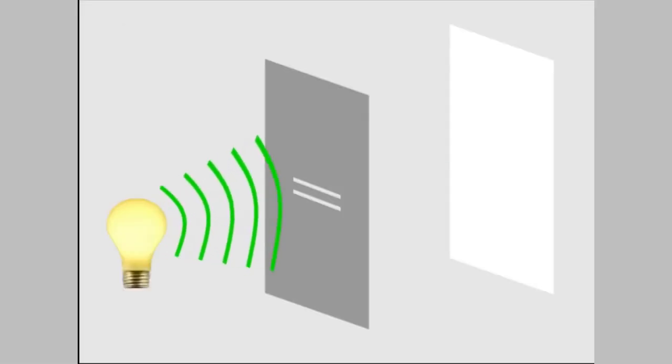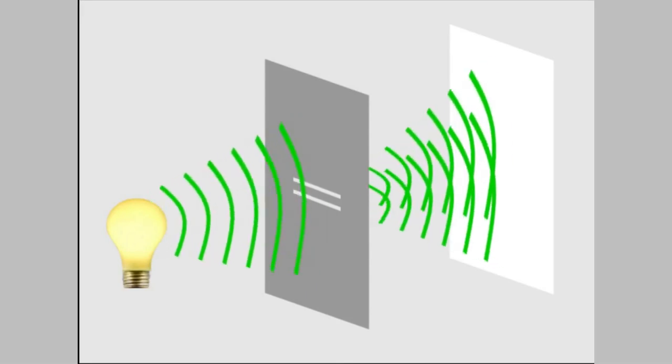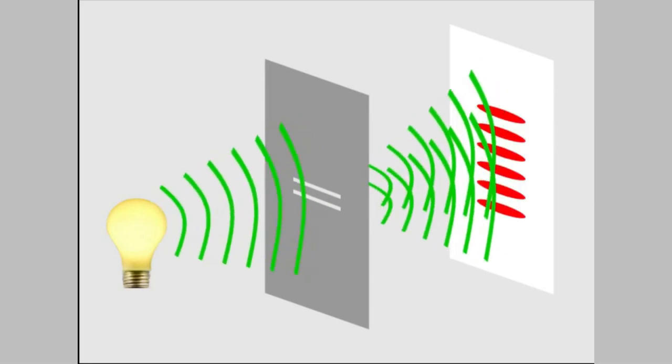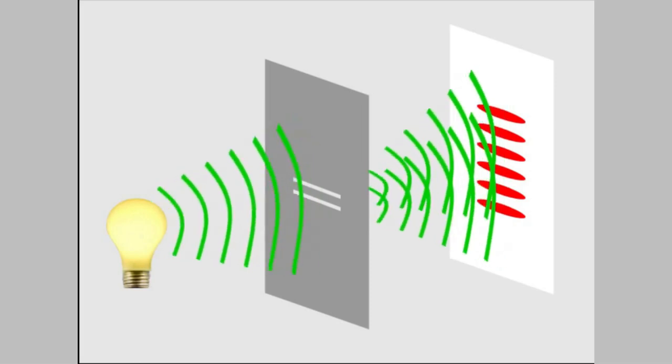The half circles that you see here are the tops of the light waves. Wherever the tops meet, they add together and become higher. For a light wave, a higher wave means brighter light. So if we put a card down here, what we'd see is bright spots where the tops of the waves meet and darker spots in between. That's what's called an interference pattern.